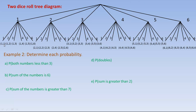All those possibilities are listed as ordered pairs. For example, this event is getting a one in the first roll and a one in the second. This event is getting a three in the first roll and a one in the second. This is getting a three in the first roll and a five in the second. Getting two fives in a row would be this one right here. So we're asked to determine each probability, and there are five different ones.